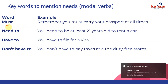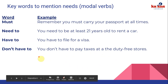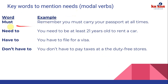Examples: 'You must carry your passport at all times.' 'You need to be at least 21 years old to rent a car.' 'You have to file for a visa.' And the negative: 'You don't have to pay taxes at the duty-free stores.' These modals express needs and obligations. That's the end of lesson number one — see you for lessons two and three!